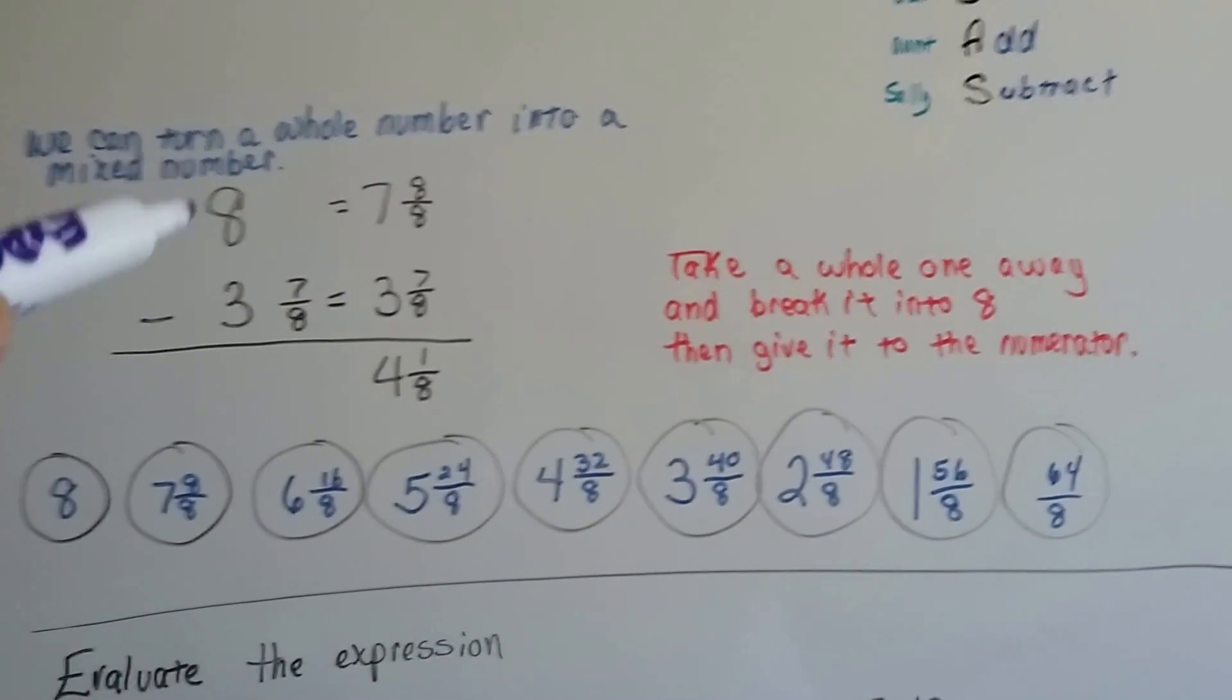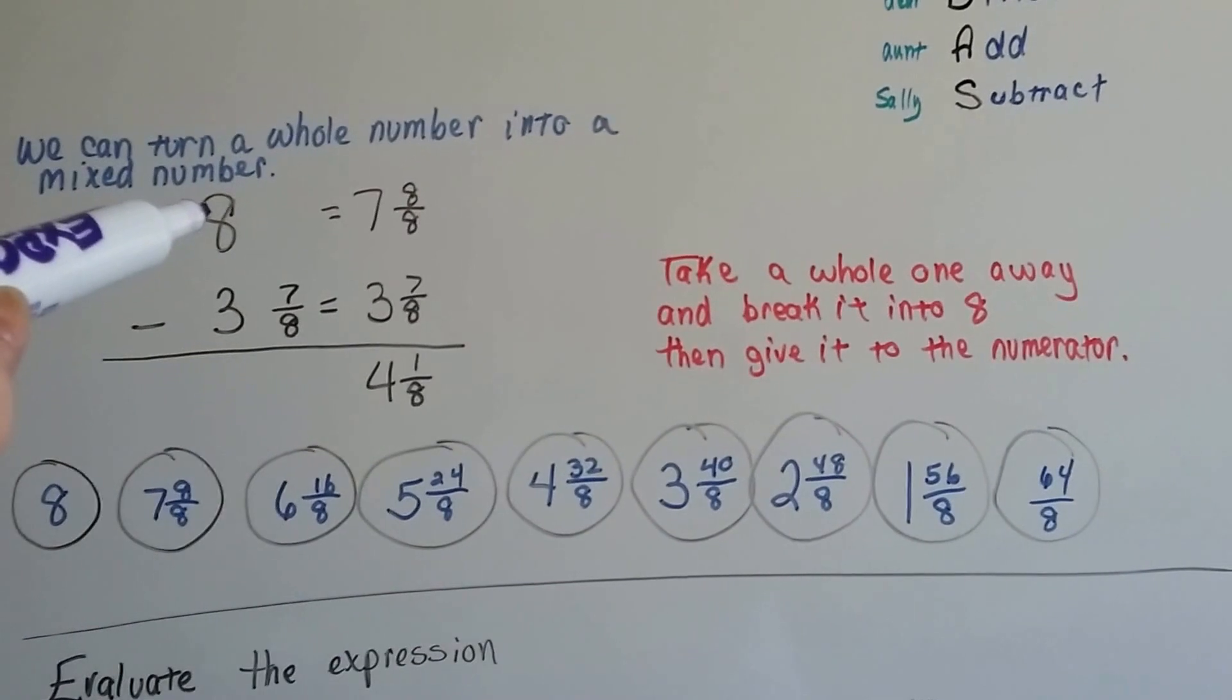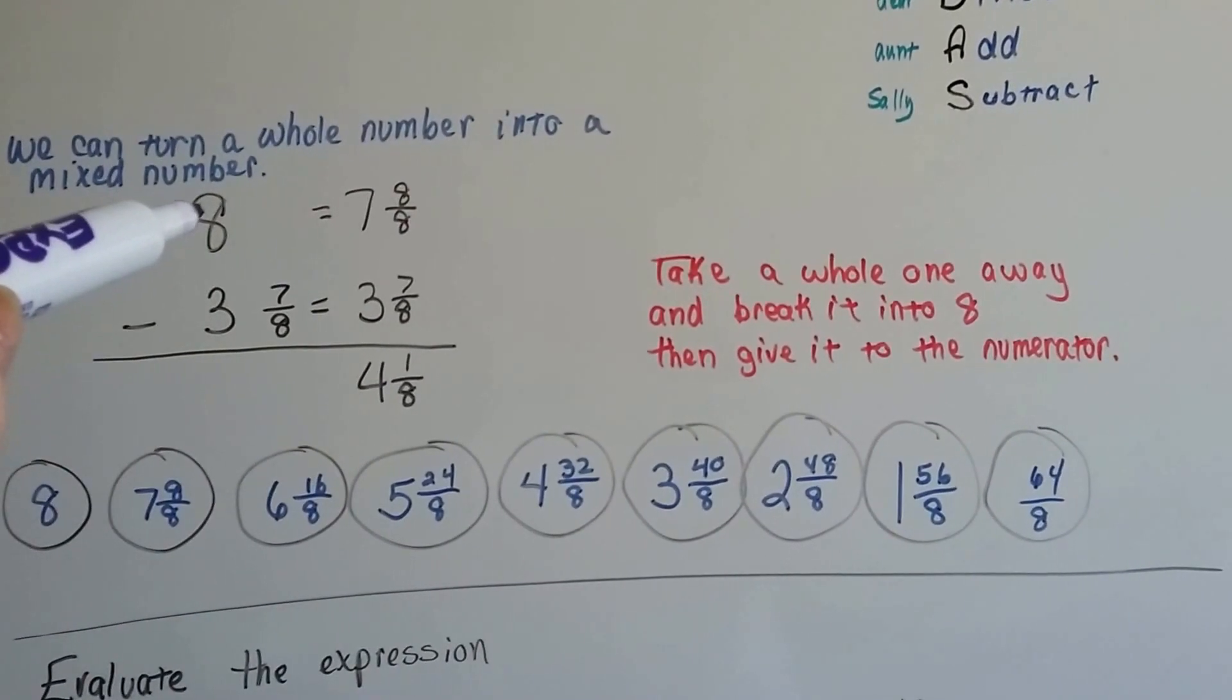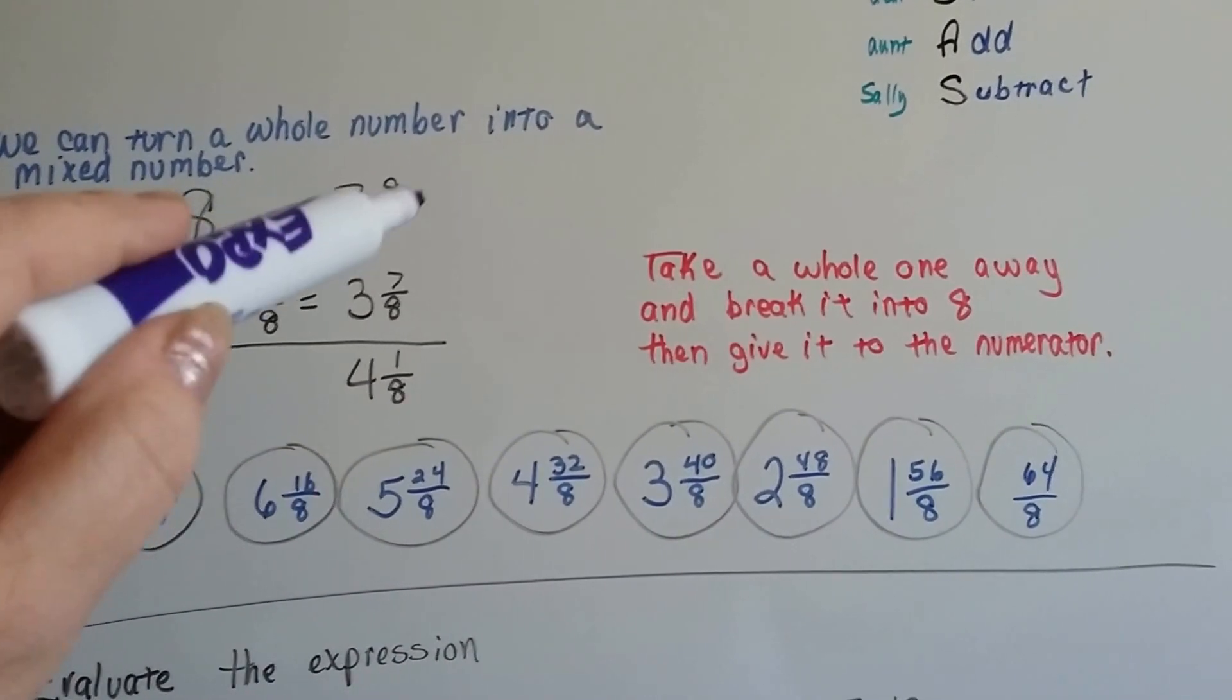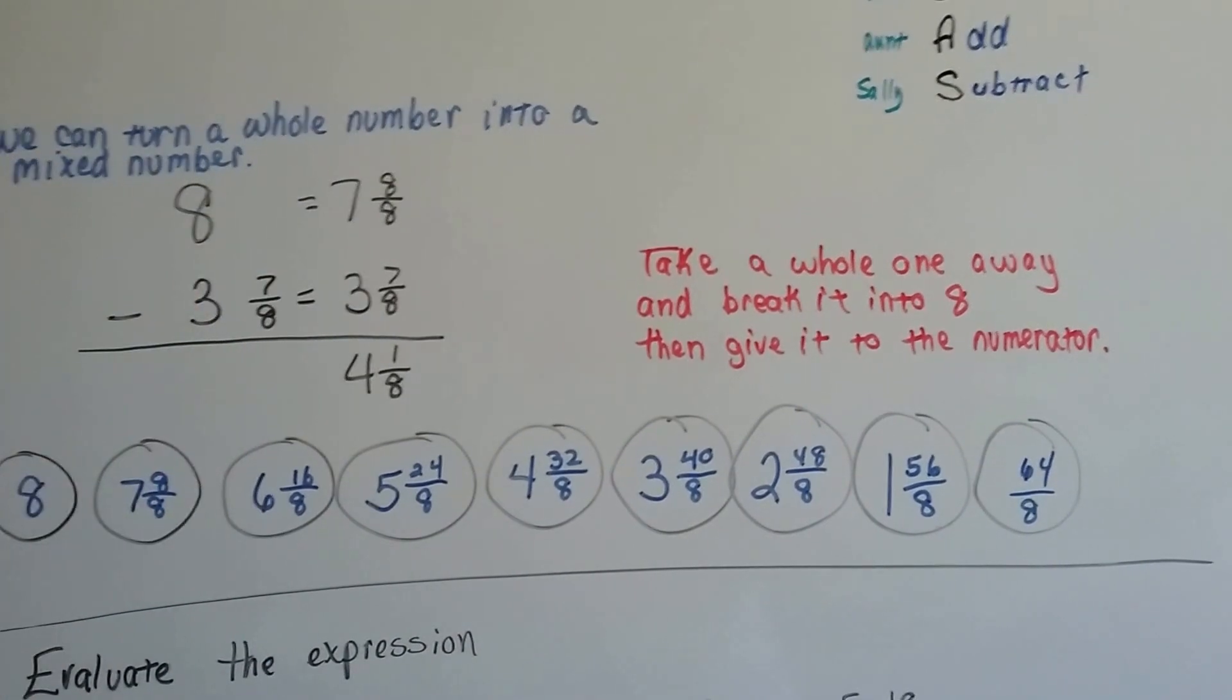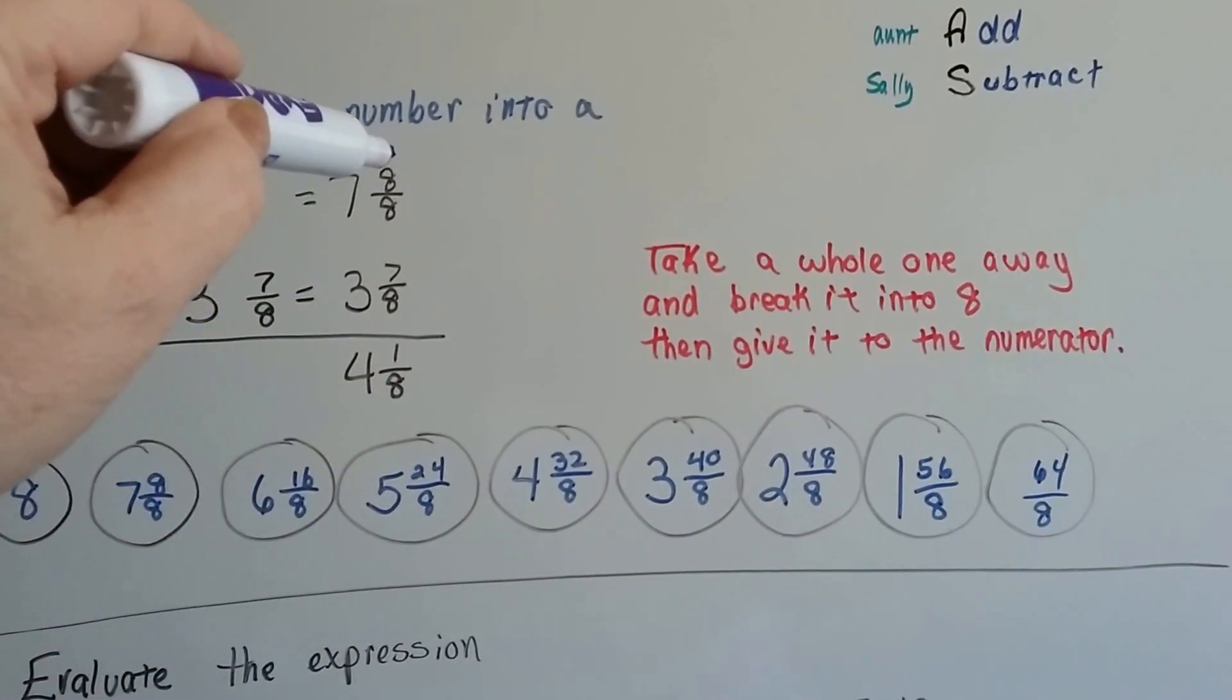We take a whole one away from here, and we break it into 8 eighths and give it to the numerator. Break it into 8 and add it to this guy up here.